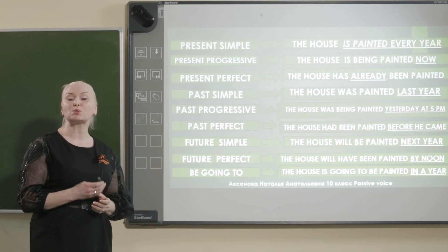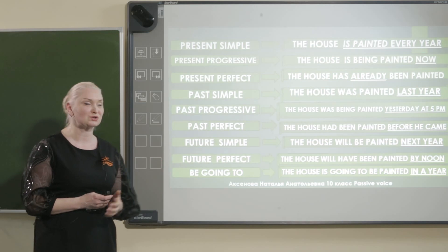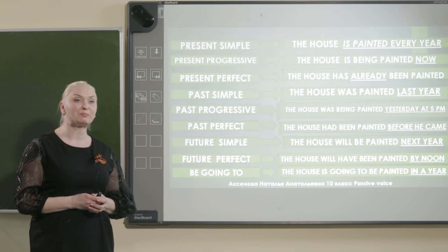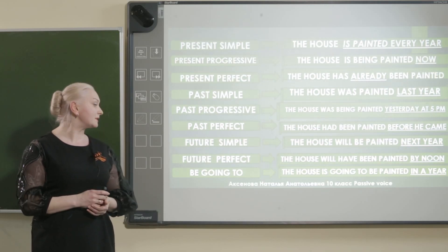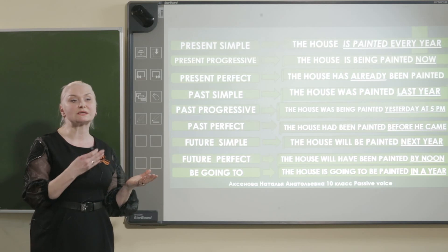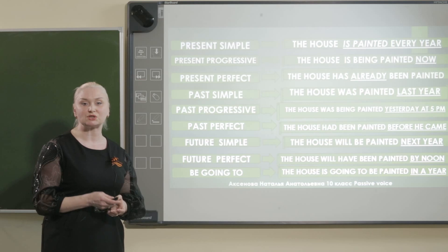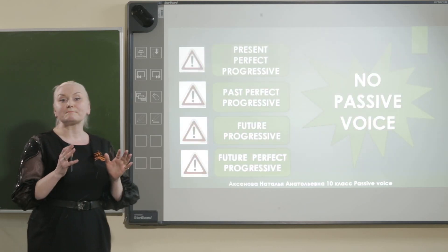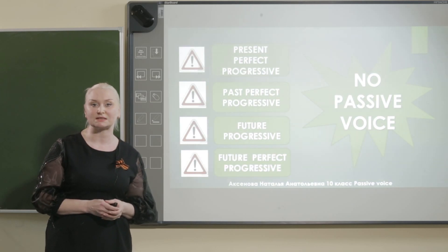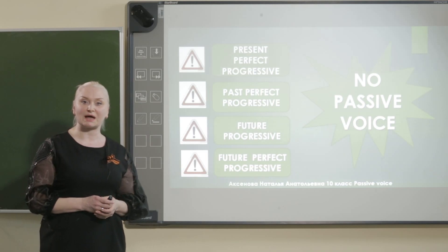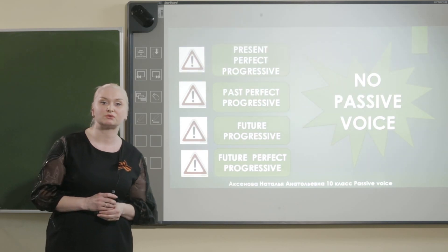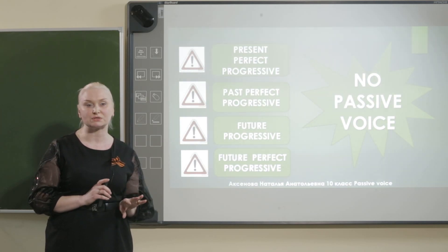Future simple: the house will be painted next year — дом будет покрашен в следующем году. Future perfect: the house will have been painted by noon — дом будет покрашен к какому-то определённому времени. And the construction 'to be going to' for future: the house is going to be painted in a year — дом собираются покрасить через год. But there are some tenses which are not used in passive voice: present perfect progressive, past perfect progressive, future progressive, and future perfect progressive. You have to remember — these tenses are not used in passive voice.